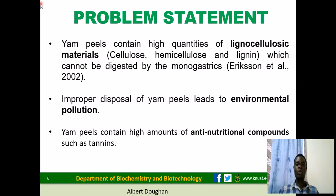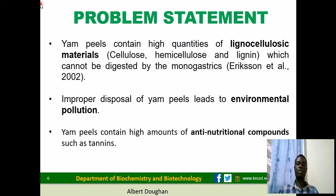The problem is that YAM peels contain high amounts of cellulose, hemicellulose, and lignin, and animals do not have the appropriate enzymes for their degradation. Also, improper disposal of YAM peels leads to environmental pollution. YAM peels also contain high amounts of anti-nutritional compounds such as tannins, which interfere with nutrient absorption in farm animals and must therefore be removed.